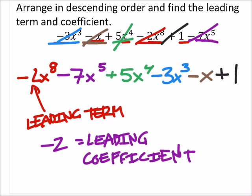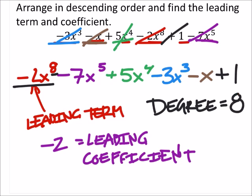I suppose it didn't ask for it, but what would the degree of this polynomial be? Since we have this arranged in descending order, our exponent for the leading term now is the degree. So we can see that's 8 right there, so the degree of this one is 8.